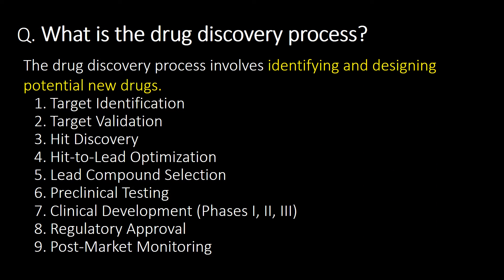The second question: what is the drug discovery process? The drug discovery process involves identifying and designing potential new drugs. It typically involves nine important steps: first, target identification; second, target validation; third, hit discovery; fourth, hit to lead optimization; fifth, lead compound selection; sixth, pre-clinical testing; seventh, clinical development — that is Phase 1, Phase 2, and Phase 3 trials; eighth, regulatory approval; and ninth, post-market monitoring.